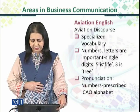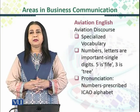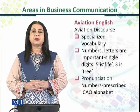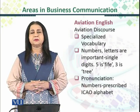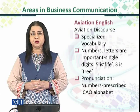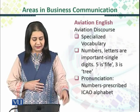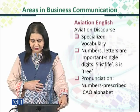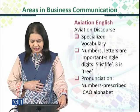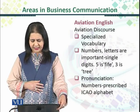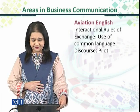Letters are always used with single digits. Five is pronounced as 'Fife' and Three is always pronounced as 'Tree.' Words are pronounced in a certain way — for example, P is pronounced as Papa and R is pronounced as Romeo, just as in maritime and military contexts. These pronunciations are prescribed and the ICAO alphabet is used.